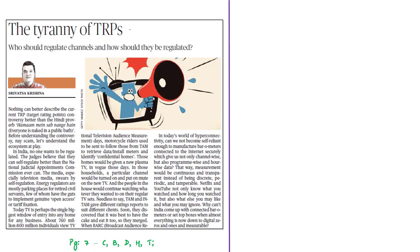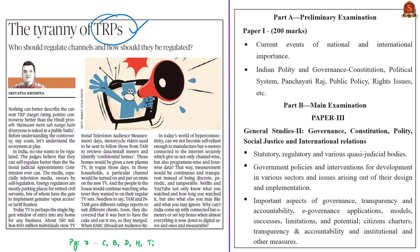The first news article is an editorial written by an IAS officer, a civil servant. In this editorial, he is talking about the TRP controversy currently going on in India. Recently, on 8th October 2020, the Mumbai police busted a target rating points manipulation racket, alleging that three television channels are involved in manipulating TRPs. In this context, the author has written this editorial. Here we will understand what TRP is and how it is measured.